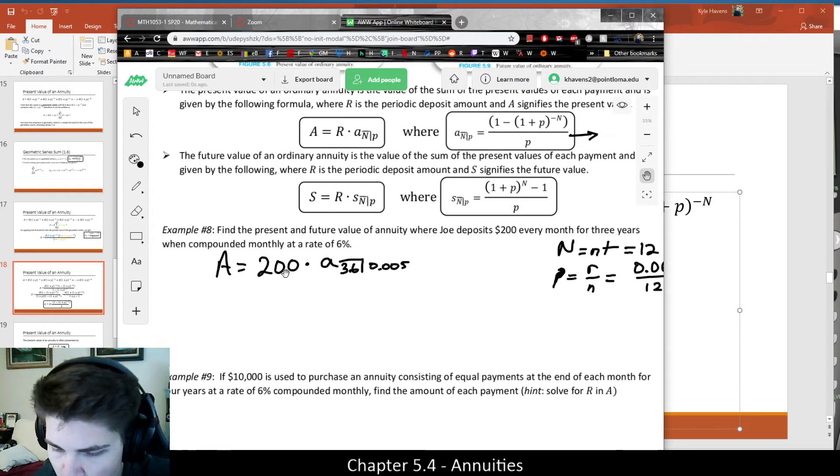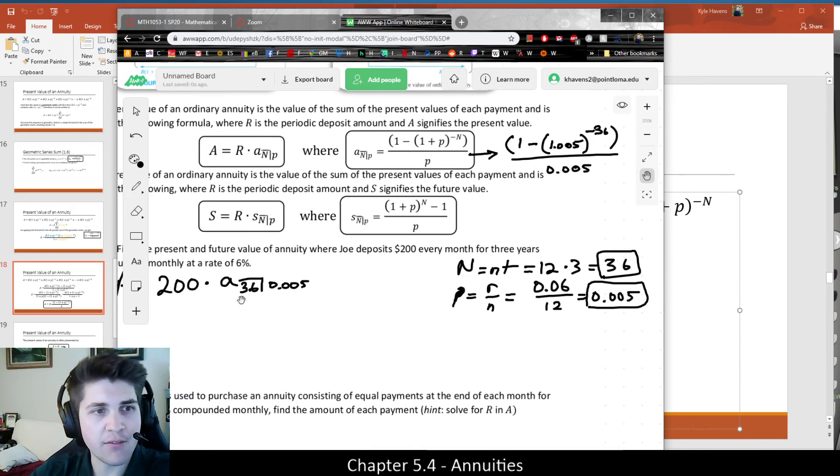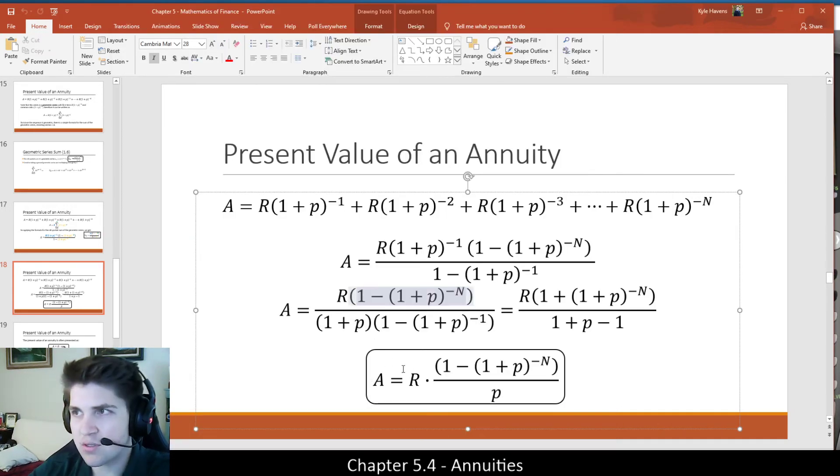But basically, I could also calculate A sub 36, 0.005 just by using this particular formula. So if I plug those things in, that would be 1 minus 1 plus P, which is 1.005, to the negative n, all divided by P. And that should give me the value of A evaluated at 36 and 0.005 as my multivariate function. And we just need to multiply that by 200. Or, if that's getting you confused, just use this formula, because it's the same dang thing. You plug in R, you plug in the periodic constraint, you plug in the number of periods, you're golden.